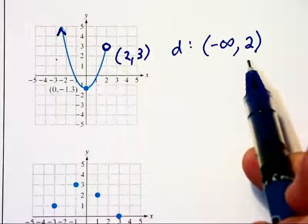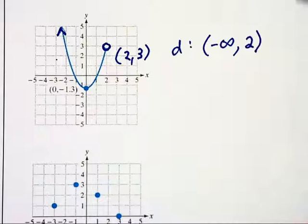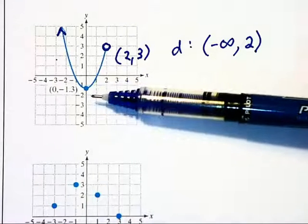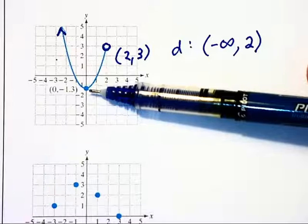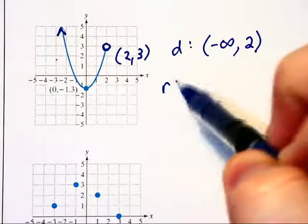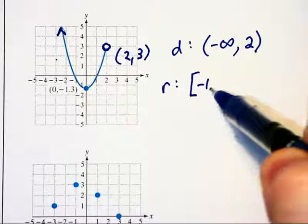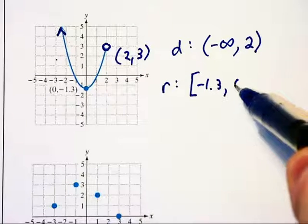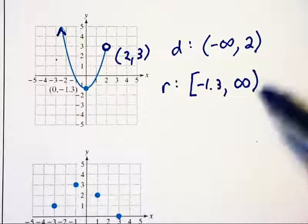And so that would be our domain. And for the range, we can see that there's a minimum value right around negative 1.3. So our range will have a minimum value of negative 1.3 and go on up to positive infinity.